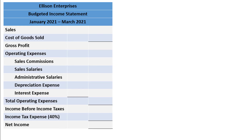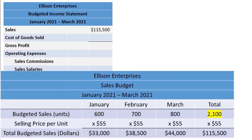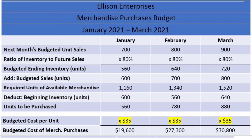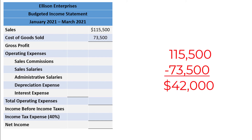Now we move on to the budgeted income statement, which helps forecast what net income would look like if all budgets were kept to exactly. We begin with sales of $115,500 from the sales budget, then subtract the cost of goods sold. There are 2,100 units budgeted to be sold in the first three months of 2021, and from the merchandise purchases budget, inventory costs $35 per unit. So cost of goods sold is 2,100 times $35, which equals $73,500. Subtracting cost of goods sold from sales gives a gross profit of $42,000.